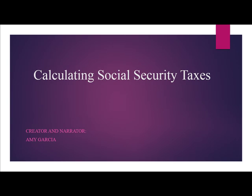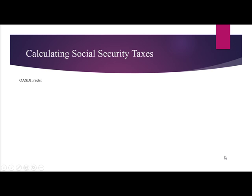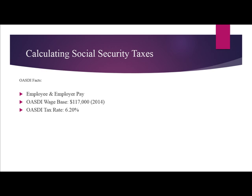Calculating Social Security Taxes. OASDI facts: The employee and the employer both pay this tax. The wage base is $117,000 for 2014. The tax rate is 6.2%. The self-employed tax rate is 12.4%, and the maximum tax is $7,254.